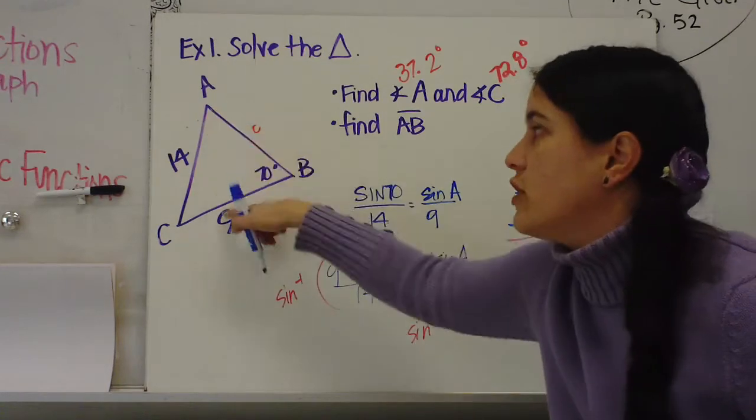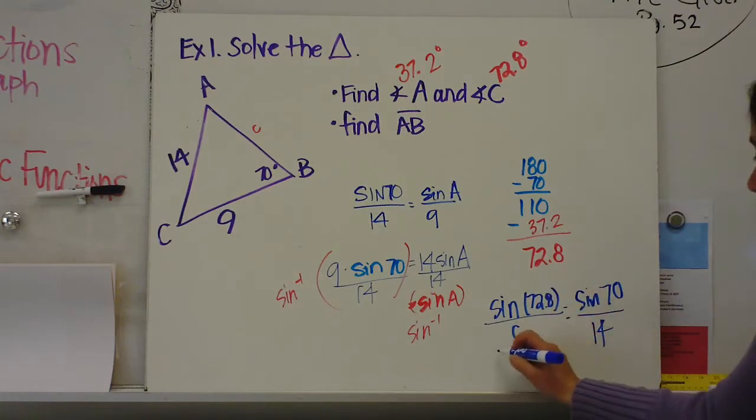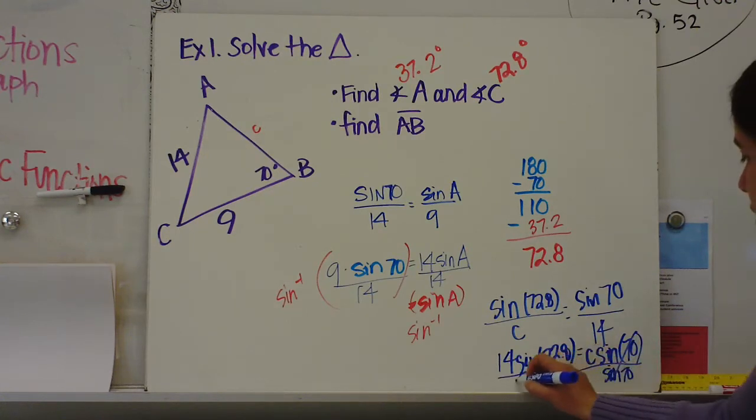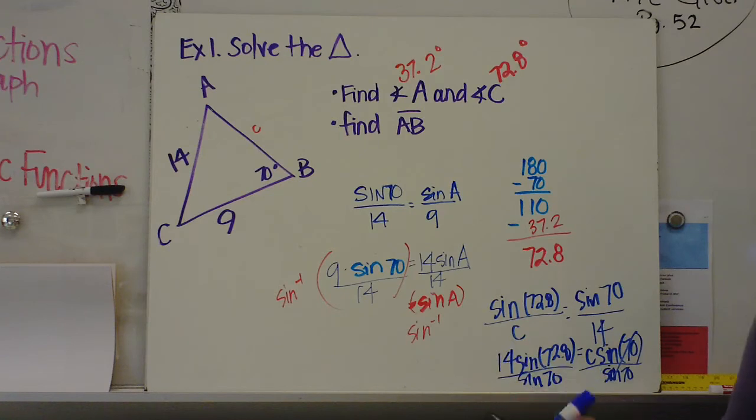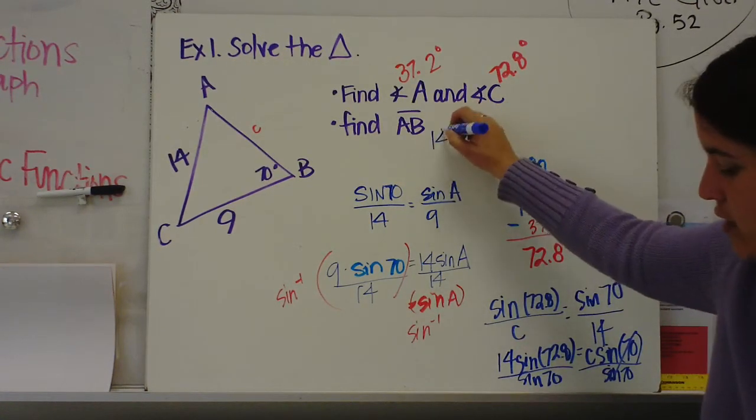Equals sine of 70 over 14. Now I chose to use 70 and 14. You could have used A and 9, but I just picked 70 and 14. You're going to cross multiply and you're going to get 14 sine of 72.8 equals c times sine of 70. Divide by sine of 70. Then you're going to type this entire thing in: 14 times the sine of 72.8 divided by sine of 70. And side c, AB, is going to be 14.2.